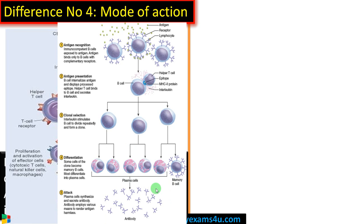These cells further differentiate to form plasma cells and memory B cells. Plasma cells secrete antibodies, which are released into circulation and neutralize toxins or deal with the pathogen, ensuring its clearance. So T helper cells can also mediate humoral immunity, or antibody-mediated immunity, by activating B cells.